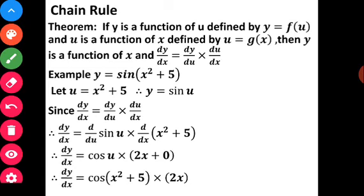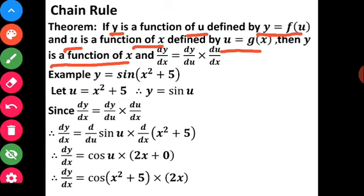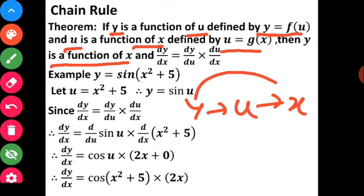What we are going to learn in 12th standard is the chain rule. Theorem: the proof is not required, but let's understand the statement. If y is a function of u — defined as y = f(u) — and u is a function of x — defined as u = g(x) — then since y depends on u and u depends on x, ultimately y is a function of x.